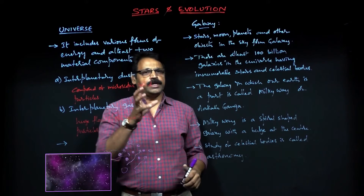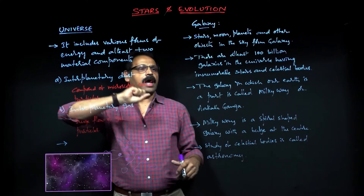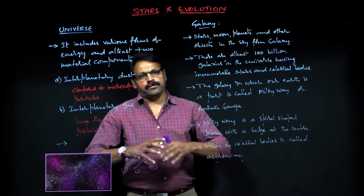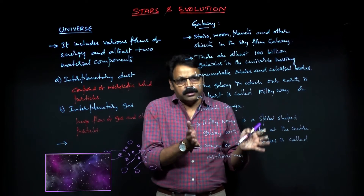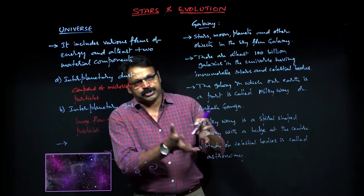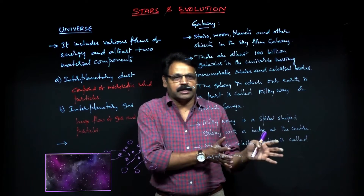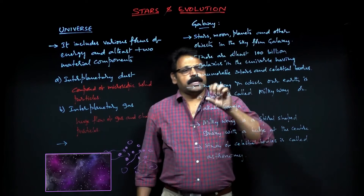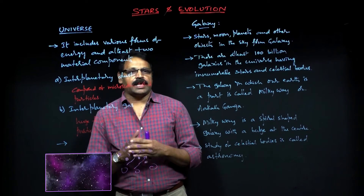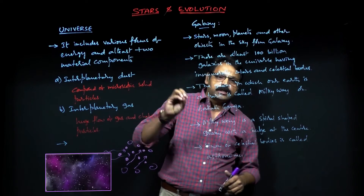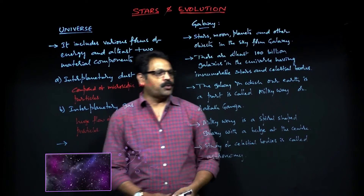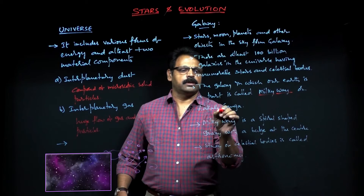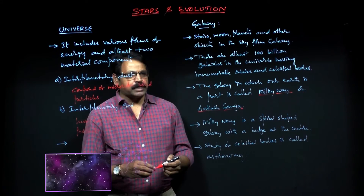The major components of a galaxy are these objects, and as mentioned, there are hundreds of billions of galaxies in the universe. Galaxies are categorized based on planets, moons, and their motion and various characteristics. Earth is part of one of these many galaxies. The galaxy in which Earth is a part is called the Milky Way, which in our Vedic notation is called Akash Ganga.